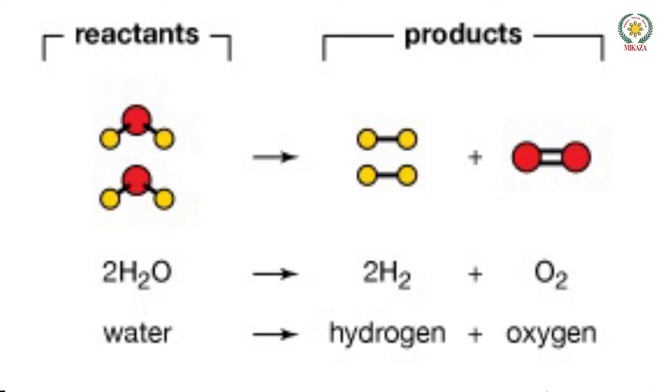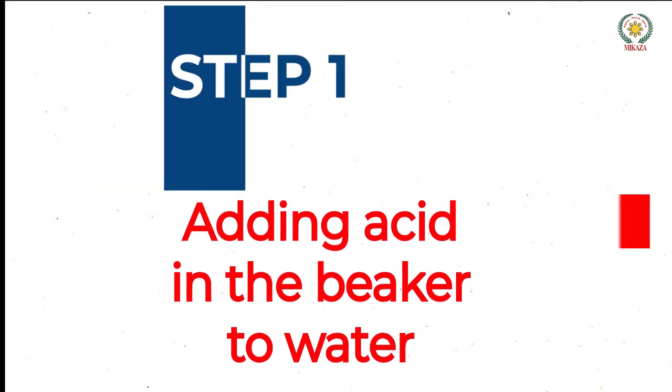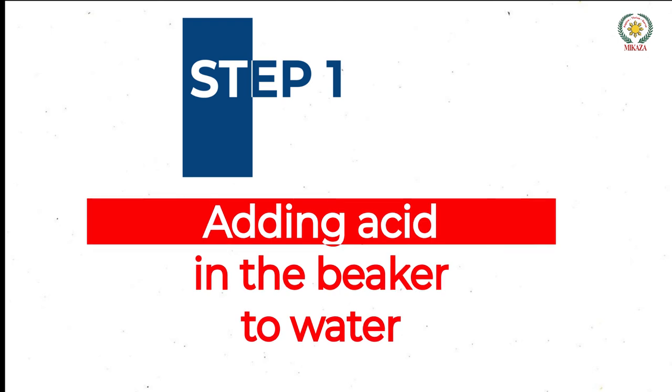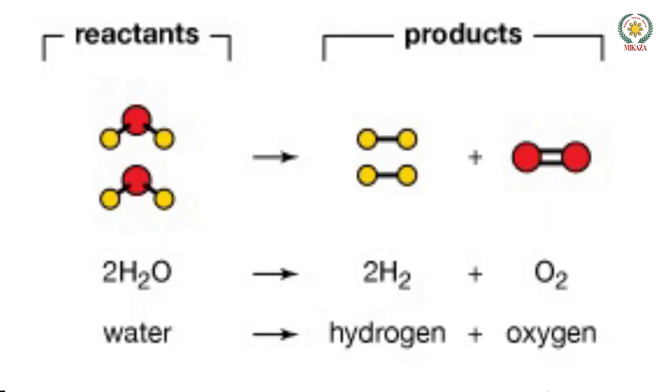Now water cannot conduct electricity if it is in its pure form without mixture of anything else. Pure H2O cannot conduct electricity because there are no ions present in it. So we put some acid in it. So we put some sulfuric acid so that the water splits into ions. So this is the electrolysis of water through which we can produce hydrogen.